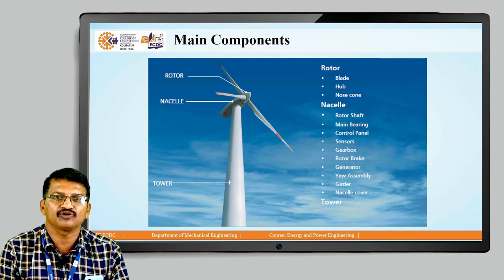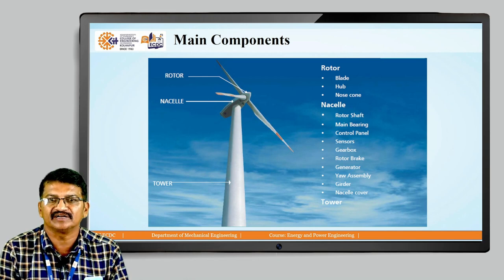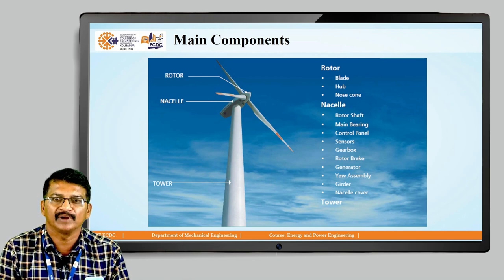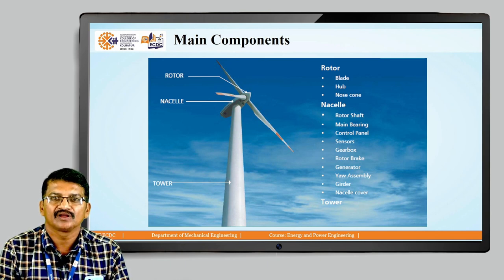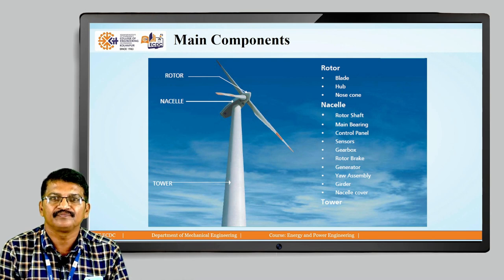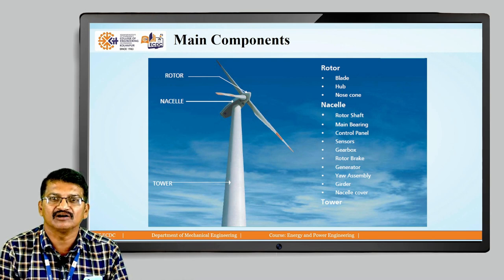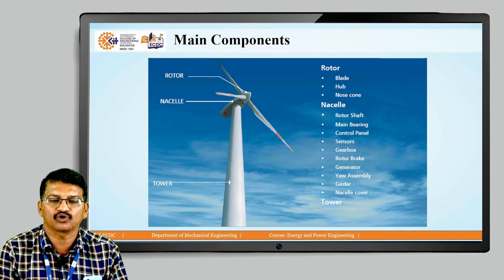The nacelle is there in which all the major parts are accommodated: the rotor shaft, main bearing, control panel, sensors, gearbox, rotor brake, generator, and yaw assembly. Then a girder is also there. The nacelle cover is there, and the third part is the tower.